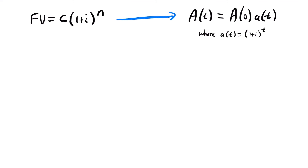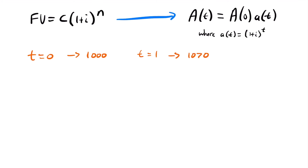Imagine at time zero you have $1,000, and at time equals one — a year from now — you have $1,070. To find the annual effective interest rate, notice you earned $70 of interest over that year. You can find the annual effective rate by dividing the interest earned by your initial deposit.